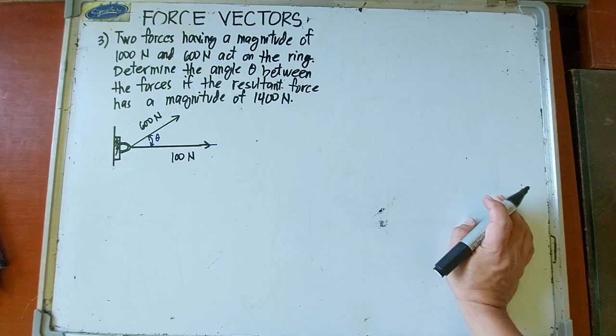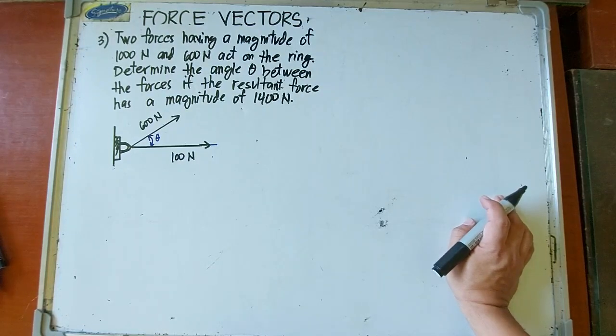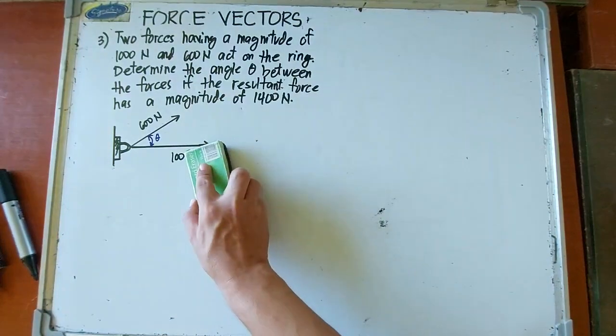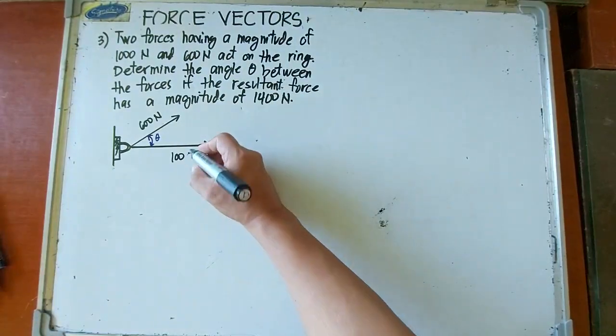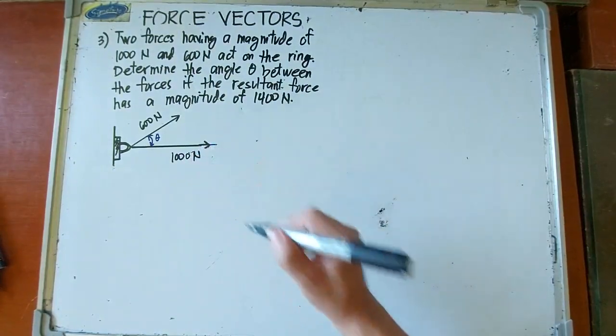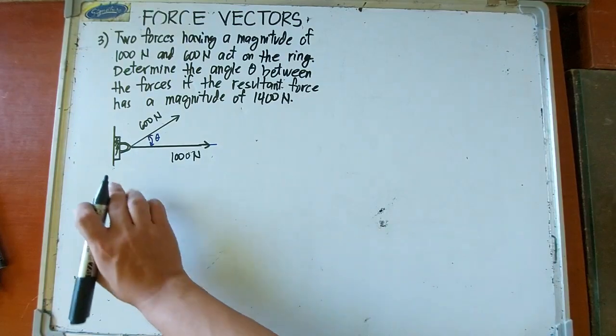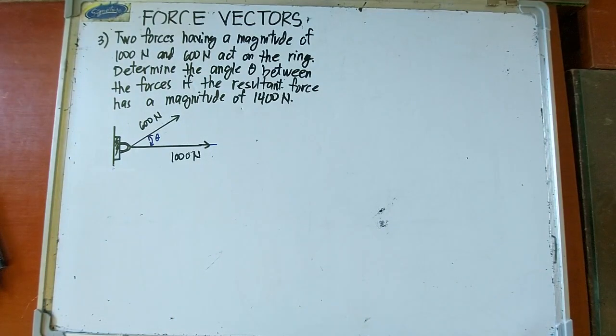Two forces having a magnitude of 1,000 newtons and 600 newtons act on the ring. Determine the angle theta between the forces if the resultant force has a magnitude of 1,400 newtons. So the magnitude of the resultant is 1,400 newtons.